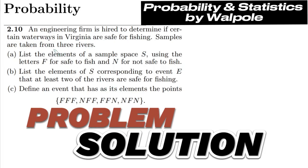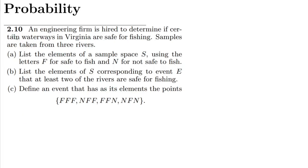Welcome back guys, I hope all of you are well. This is question 2.10. The statement is: an engineering firm is hired to determine if certain waterways in Virginia are safe for fishing. Samples are taken from three rivers. List the elements of a sample space S using the letter F for safe and N for not safe to fish.